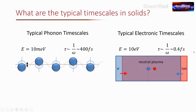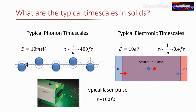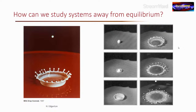Electronic time scales occur on the scale of less than a femtosecond — in the region of attoseconds. To access these time scales, we use an ultrafast laser, which emits pulses roughly 100 femtoseconds in width. Using these lasers, we can perform experiments where we disturb the solid in some way and watch the system relax back to thermal equilibrium.